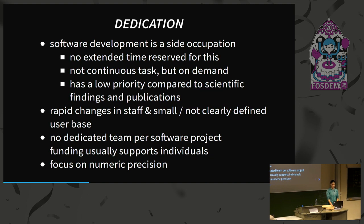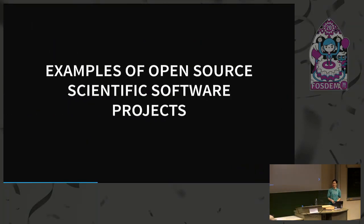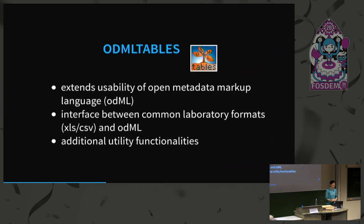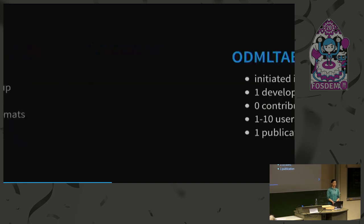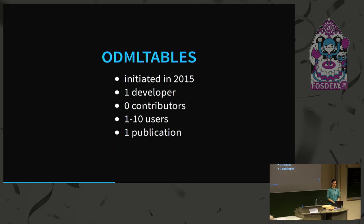Let me quickly show you a couple of examples of scientific software projects at different scales. There's software on all scales in science. One small project is an interface to make a certain standard more usable in a laboratory environment. It's rather young — only a couple of years old — with only one developer, no contributors, only a few users, and one publication referencing it. Basically if this one developer decides to leave science, the project is done. I think most projects in science are on that scale.